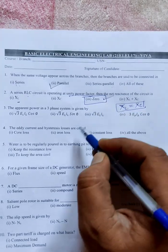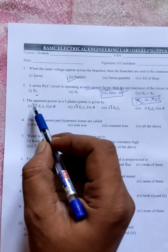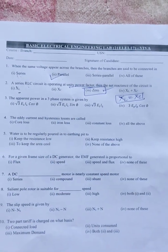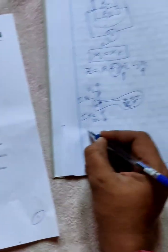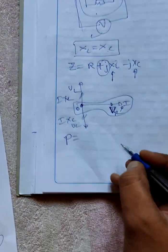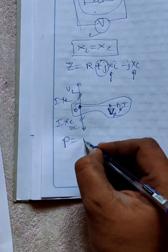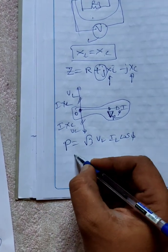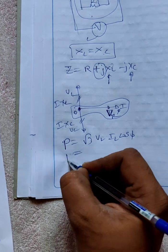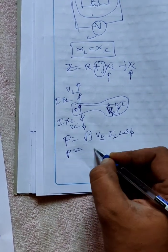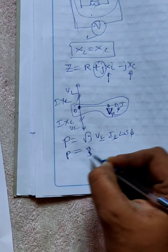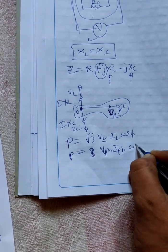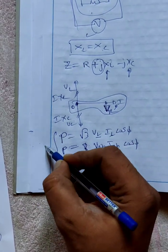Question 3: The apparent power in a three-phase system is given by - keep in mind apparent power. There are three types of power. One is called real power, that is root three VL IL cos phi. We can also write another way in terms of phase voltages: root three VPh IPh cos phi. What is this power? Real power.